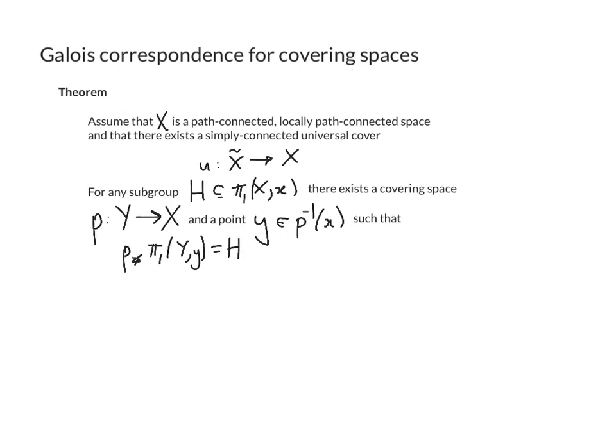More precisely, we're going to prove that if x is a path-connected, locally path-connected space, and assume that there is a simply connected universal cover, in other words a covering space x tilde of x which is simply connected.